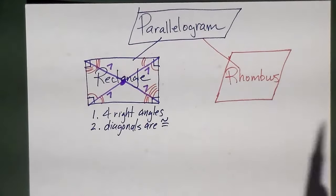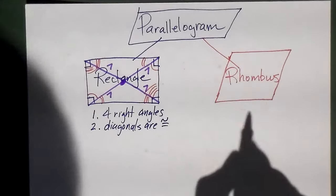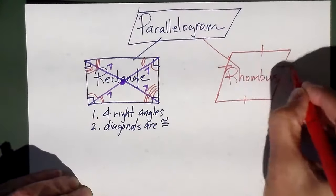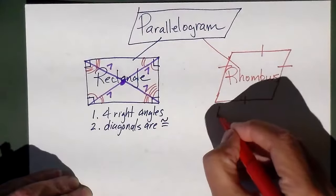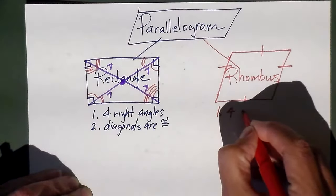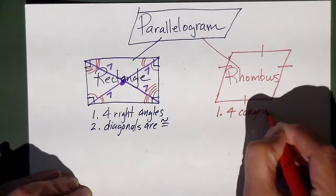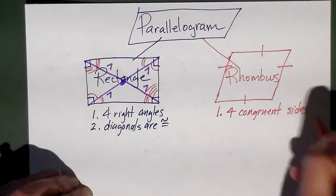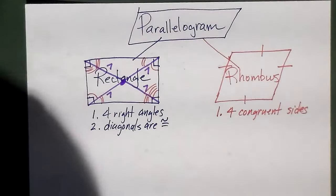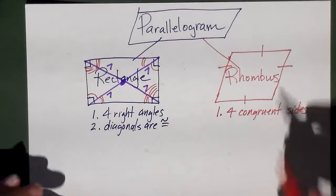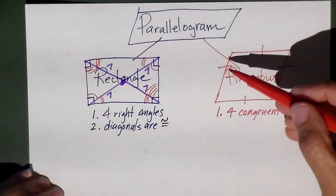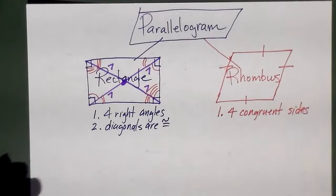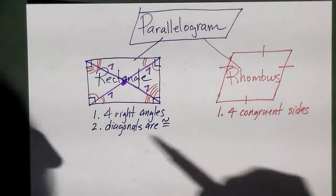Let's look at the rhombus. The rhombus is a parallelogram which has the following characteristics. Number one: four congruent sides. All of the sides are the same in the rhombus — every single one of them. So when you do the distance formula in coordinate geometry, you would get all four lengths identical in the rhombus.